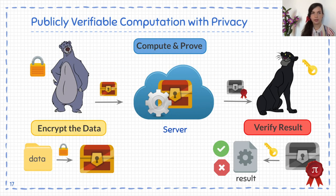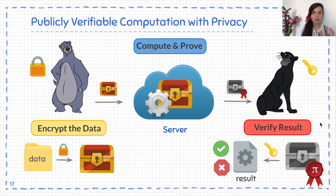We'll start with defining publicly verifiable computation with privacy. In our scheme, we would like to separate the client and the verifier — the client has the input of the computation, encrypts it, and delegates it to the server. The server is able to compute and prove that the evaluation on those ciphertexts was correct, and gives the result and proof to some verifier who has the secret key, can learn the output in clear, check correctness, but should not learn the inputs. So we achieve privacy of the personal data with respect to the verifier.